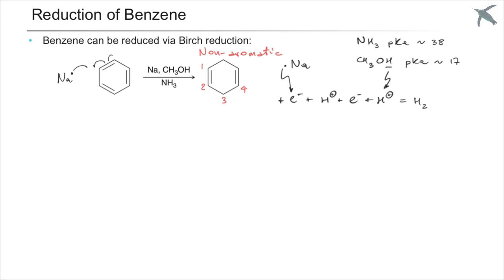In the first step, sodium forces an electron into the pi system, which breaks down into a radical anion. Note the fishhook arrows for a single electron transfer mechanism. The radical and the negative charge repel each other, so they will end up at the opposite ends of the ring.